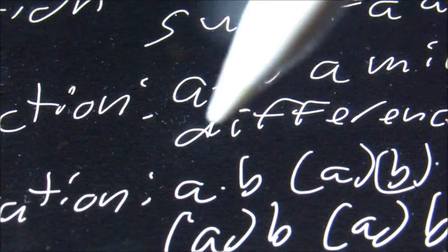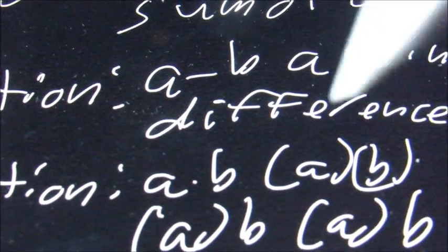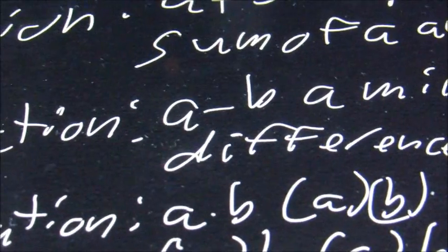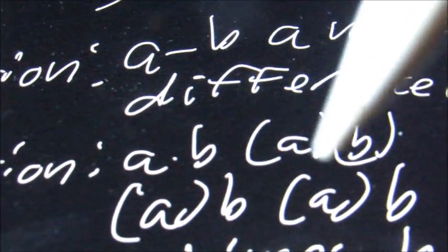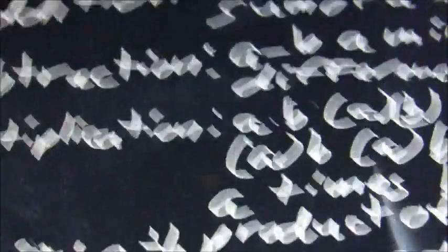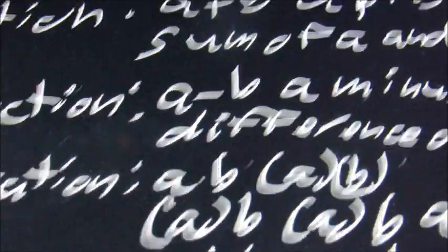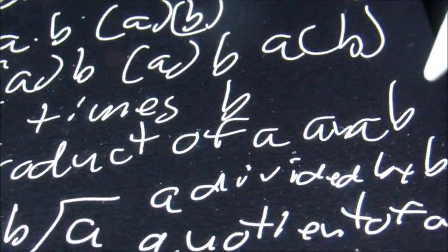For multiplication, we have A with a dot B, which means A times B. We could also have them with parentheses next to each other with no plus or minus sign in between. We could have only A in parentheses then B, or A times B, or a product of A and B.